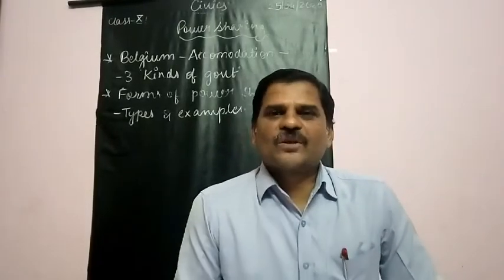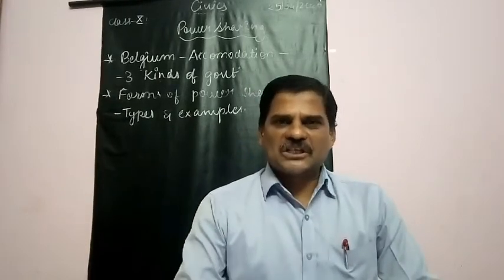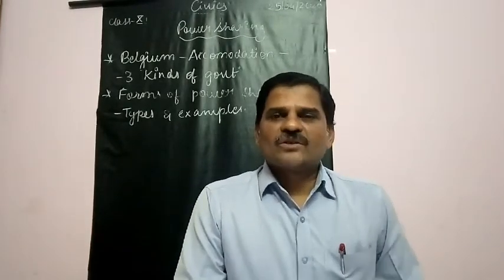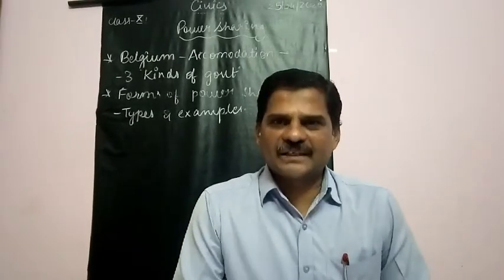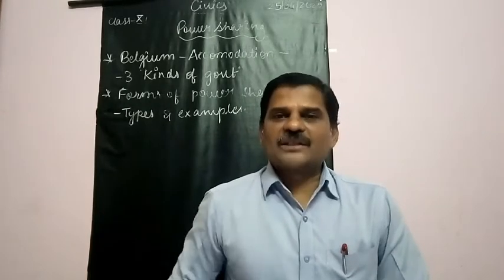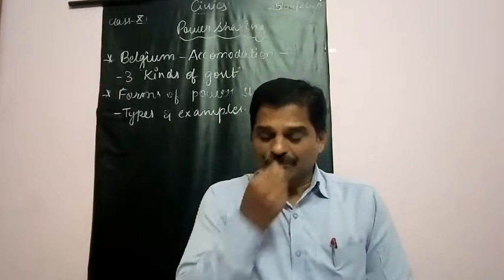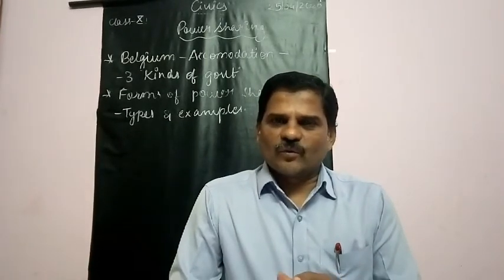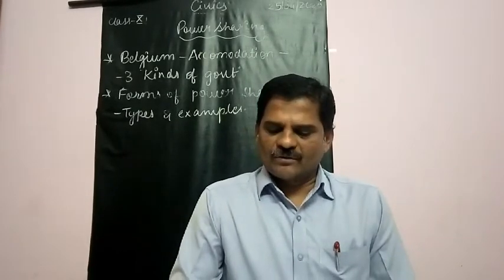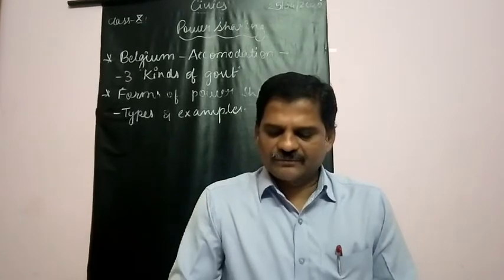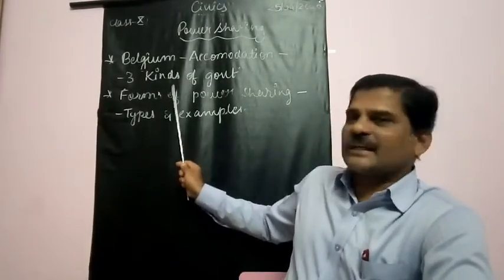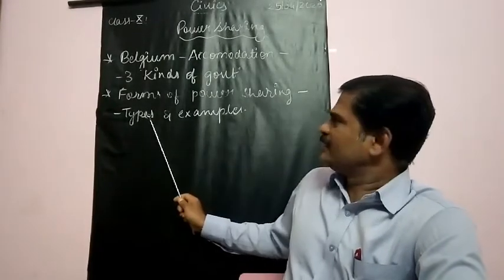Hello, good morning students. Welcome to online e-learning classes. This is your second grade and the subject is Social Science. We are reading Civics Chapter 1, that is Power Sharing. Today under this chapter we are going to read Belgium's accommodative form of government, the three forms of government in Belgium, followed by different forms of power sharing, types and examples.